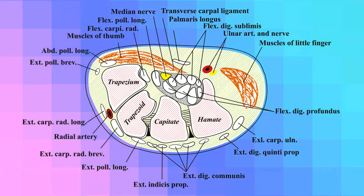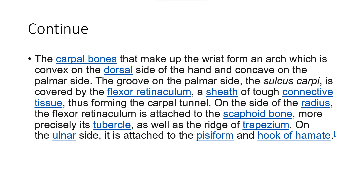On the side of the radius, the flexor retinaculum is attached to the scaphoid bone, more precisely its tubercle, as well as the ridge of the trapezium. On the ulnar side, it is attached to the pisiform and hook of the hamate.